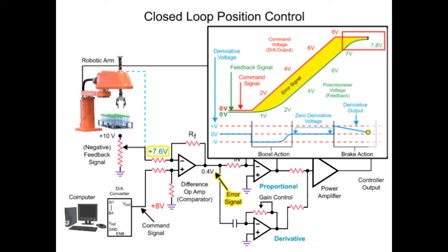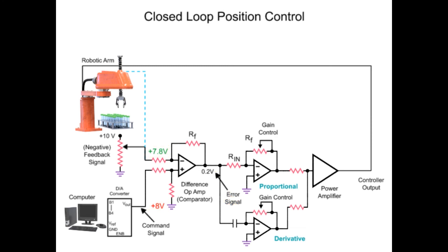Friction and mass of the robotic arm contribute negatively to the system, where the robotic arm fails to reach the desired position. With a reduced error signal due to feedback voltage and command voltage not being equal, a steady state error condition exists. In this condition, the difference op-amp creates a steady voltage and the arm continues to move.